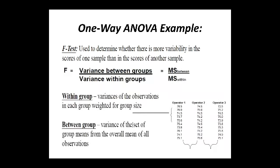The F-test is used to determine whether there is more variability in the scores of one sample than in another. The formula is variance between the group divided by variance within the group, denoted as mean sum of squares between divided by mean sum of squares within. Within-group variance is the variance of observations in each group weighted for group size, whereas between-group variance is the variance of the set of group means from the overall mean of all observations.